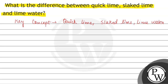Quick lime is calcium oxide. The general formula is CaO. And slaked lime is calcium hydroxide, Ca(OH)₂. And lime water is the dilute solution of calcium hydroxide in water, that is H₂O.